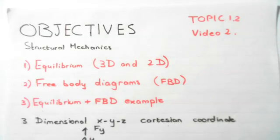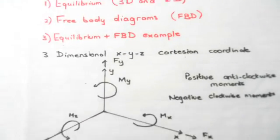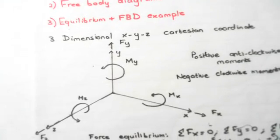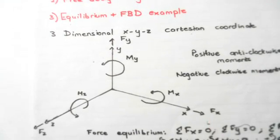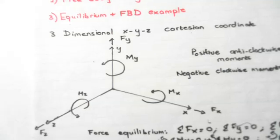The following is a three-dimensional x, y, z Cartesian coordinate system. We have the x-axis over here, the y-axis over here, and the z-axis over here.